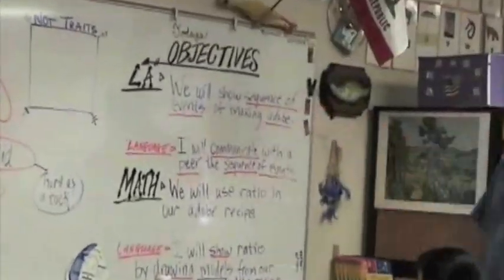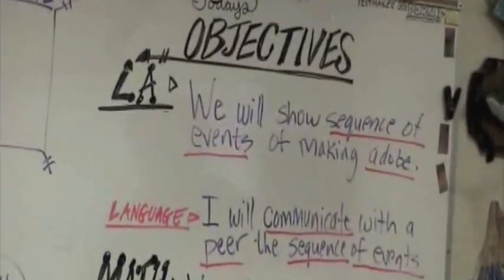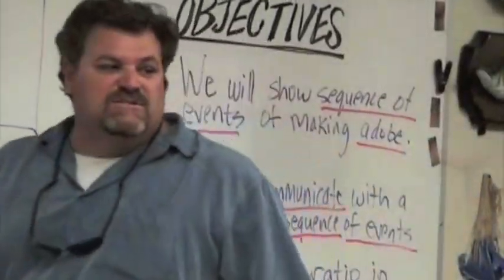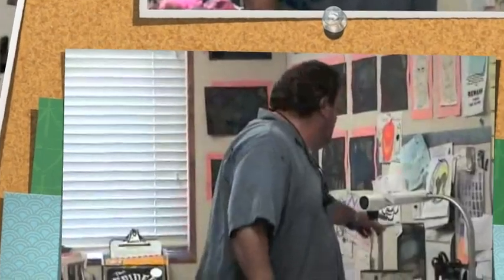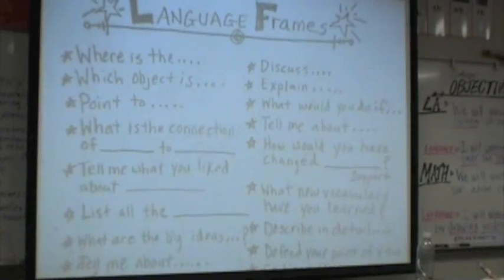We're going to show the sequence of events of making Adobe Bricks. We're going to communicate with a peer the sequence of events using complete sentences and using vocabulary we've learned along the way. Think of a question about Adobe and communicate that question to a peer. The peer is then going to communicate an answer using complete sentences and your prior knowledge of Adobe.